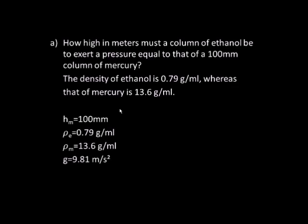The density of ethanol is 0.79 g per milliliter, whereas that of mercury is 13.6 g per milliliter.